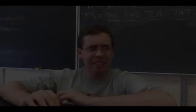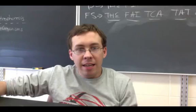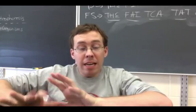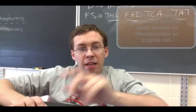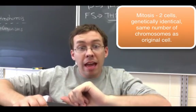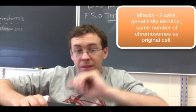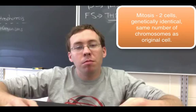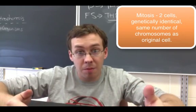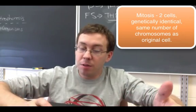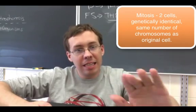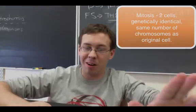Keep in mind that in mitosis, we're making two cells. They are genetically identical and they have the same number of chromosomes as the cell started with. So if we are, as humans, we have 46 chromosomes, each cell at the end of mitosis should have 46 chromosomes as well.